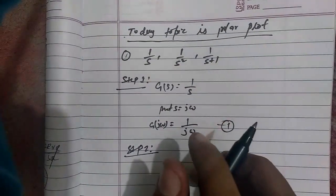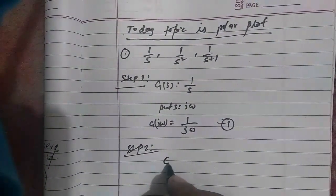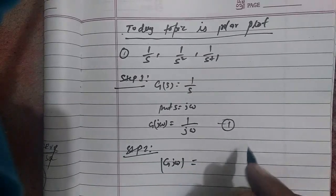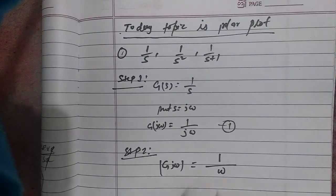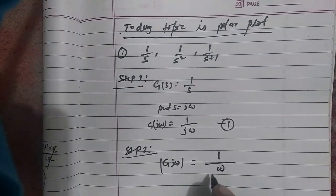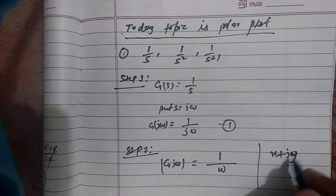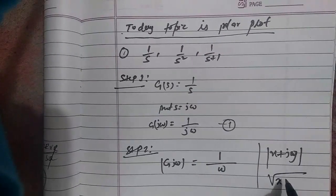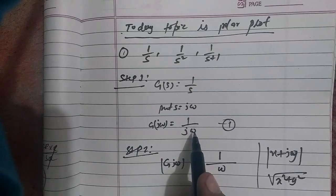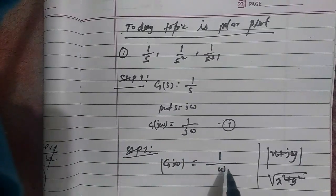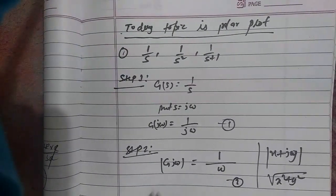In Step 2, we find the magnitude and phase. The magnitude of G(jω) equals 1 divided by ω, because the modulus of jω is √(0² + ω²) = ω. As we know, the modulus of x + jy equals √(x² + y²), so for 0 + jω the modulus is √(ω²) = ω.